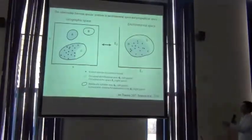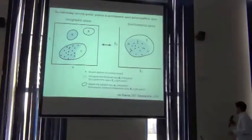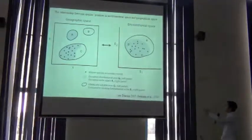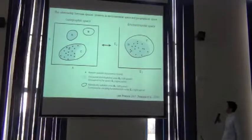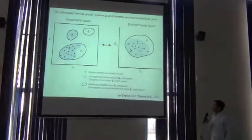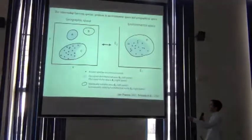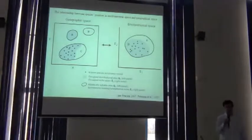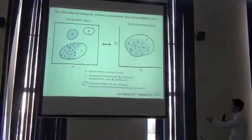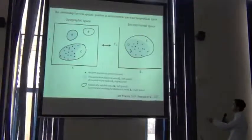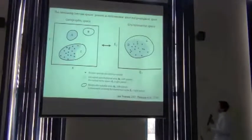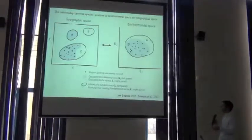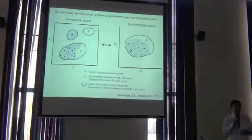Now let's contrast working in geographic space with working in environmental space. This is the environmental space we've just been working with — our ecological dimensions — looking at two environmental dimensions to start. And then this is our geographic space, where X and Y might be latitude and longitude or any other coordinate system. We have a direct mapping between the two. We often know something about the species distribution in the form of occurrence records, represented with crosses.